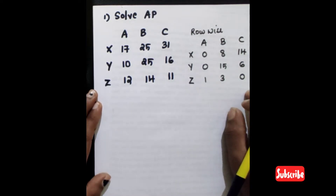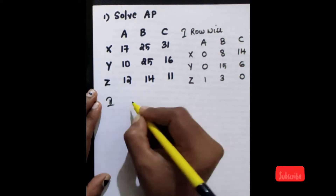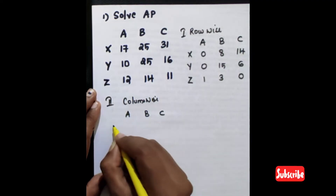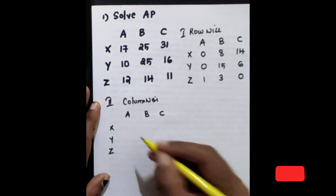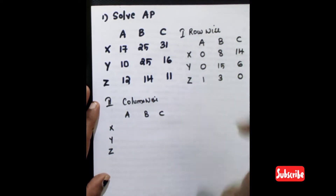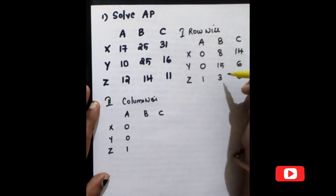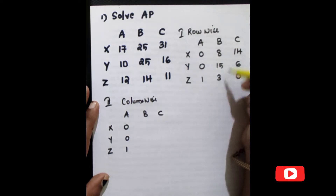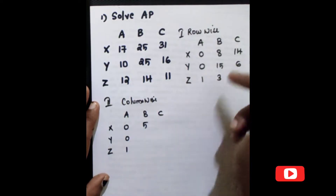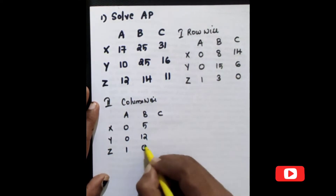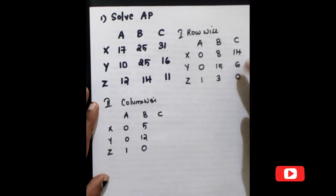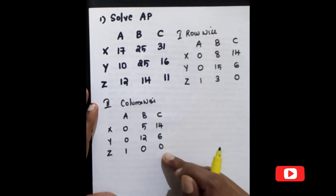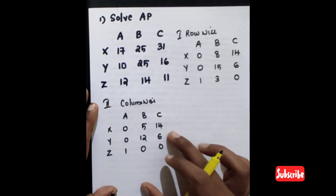The next step is column-wise reduction. Row-wise reduction is complete. Now we perform column-wise reduction. The smallest element in a column is 3, and we subtract the smallest element from each column accordingly.